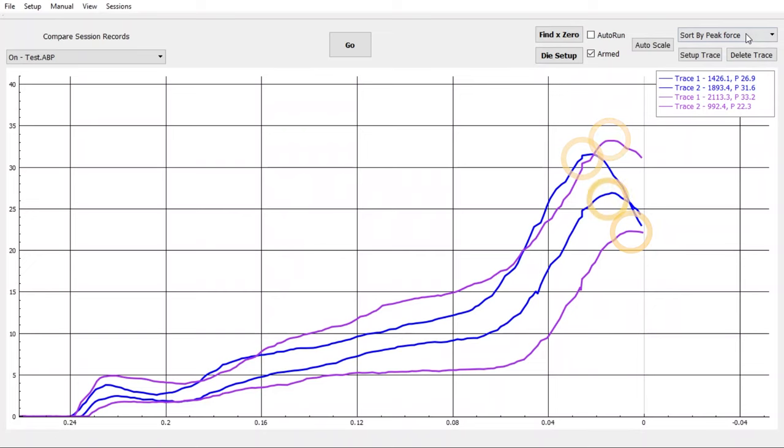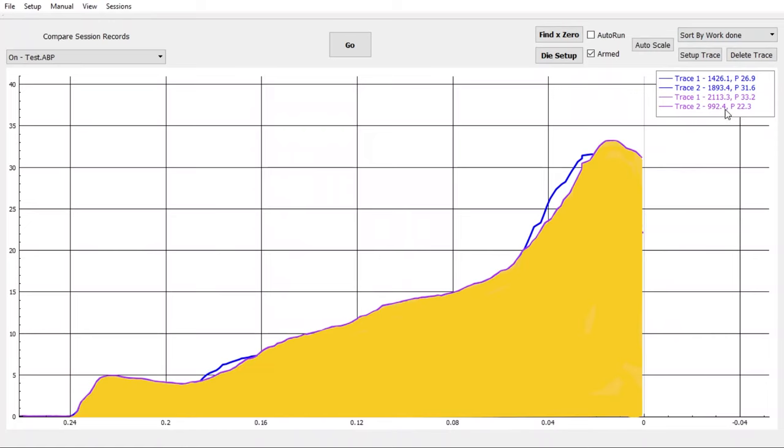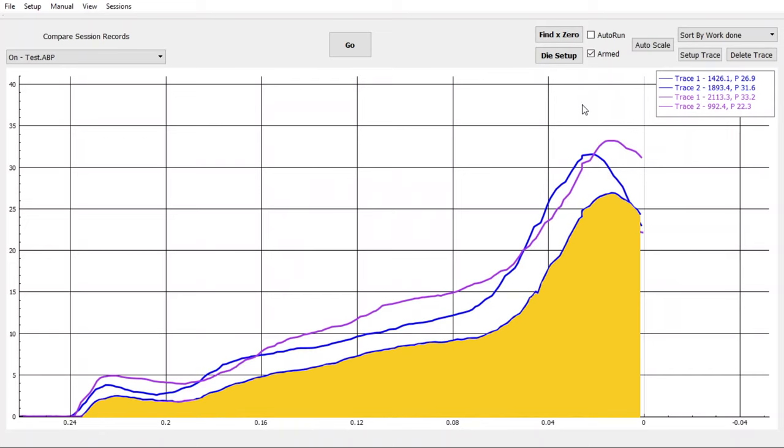You can also see if there's a flyer, you can put that to one side quite easily. You can also batch by total work done. That's the area under the chart. One trace might have a very high peak, but overall quite a low workload to put the bullet into that case. So you can sort by either of those two options.